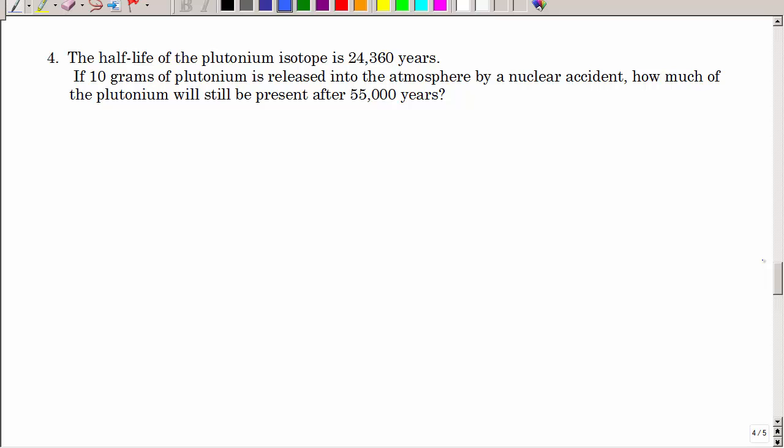Let's talk about that radioactivity. We have a half-life of a plutonium isotope is 24,360 years. Think about what that means. It takes over 24,000 years for this plutonium to decrease in amount by half. So we started out with 10 grams, we'd get 5 grams. So if 10 grams of plutonium is released into the atmosphere by a nuclear accident, how much of the plutonium will still be present after 55,000 years?